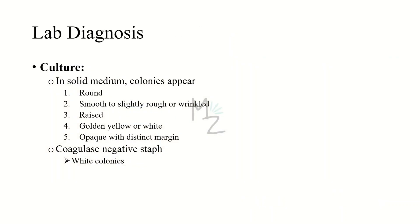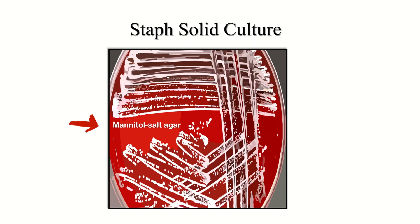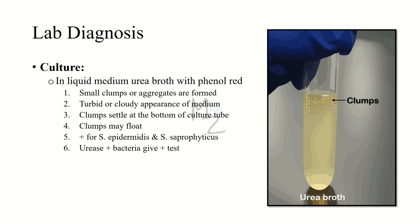Culture: since staph epidermidis is coagulase negative, it will form white colonies. We use a solid medium — mainly mannitol salt agar. Colonies will appear round, smooth to slightly rough, wrinkled, raised, and white for epidermidis, and are opaque with distinct margins. As seen in the picture, the colonies on mannitol salt agar are white. For the liquid medium, we use urea broth with phenol red added. Small clumps or aggregates form, confirming that the bacteria is urease positive. In the culture tube, turbid or cloudy appearance is found; clumps may settle at the bottom or float. This test is positive for staph epidermidis and staph saprophyticus.